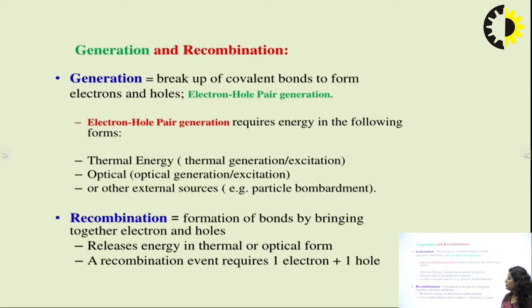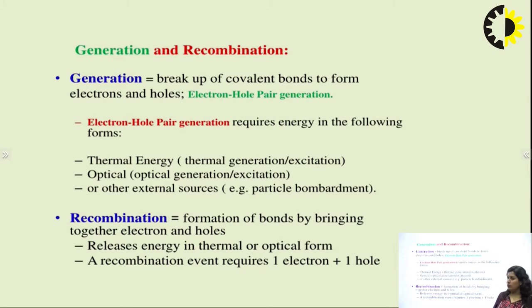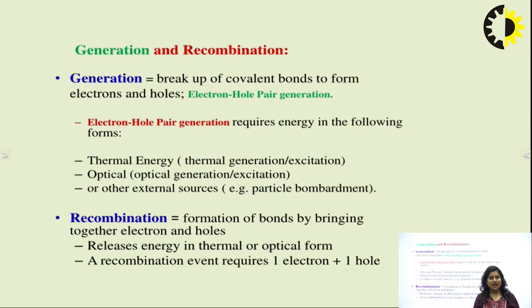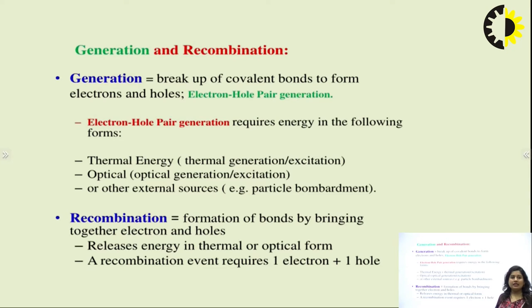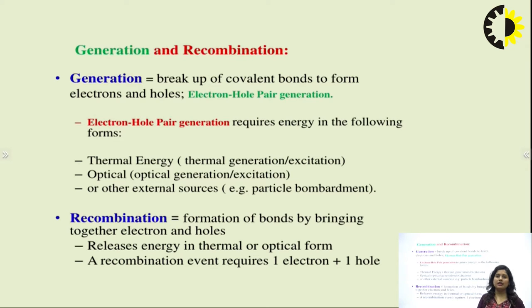A recombination event requires one electron and one hole. There is a very famous process known as electroluminescence, which basically occurs in LEDs. Whenever one electron and one hole recombine, and these pairs keep recombining, they produce light — but this light is not directional. As in the case of lasers we have directional, unidirectional light; in the case of LEDs it is light coming out from all the surfaces of the structure.